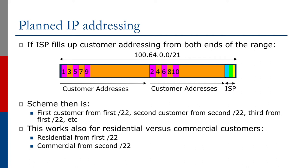Traffic for the first /22 — customers one, three, five, seven, nine — will come in on one link, and traffic for the other customers — two, four, six, eight, ten — will come in on the other link. This gives rudimentary load balancing, assuming each customer is doing more or less the same thing on the internet. Alternatively, you could adopt another strategy: maybe the first /22 is for residential customers and the second /22 is for commercial or enterprise customers, or some other allocation to suit.